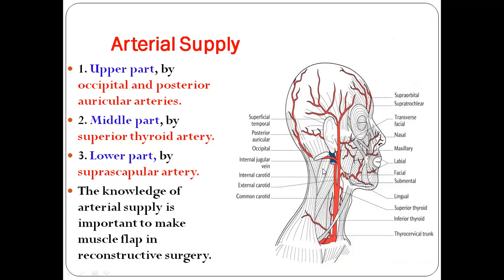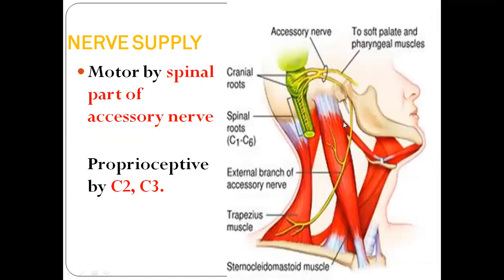Blood supply of sternocleidomastoid: the upper part is supplied by occipital and posterior auricular arteries; the middle part by the superior thyroid artery; the lower part by the suprascapular artery. Knowledge of arterial supply is important for making muscle flaps in reconstructive surgeries. Nerve supply: the motor nerve is the spinal part of the accessory nerve; proprioceptive nerves are C2 and C3.